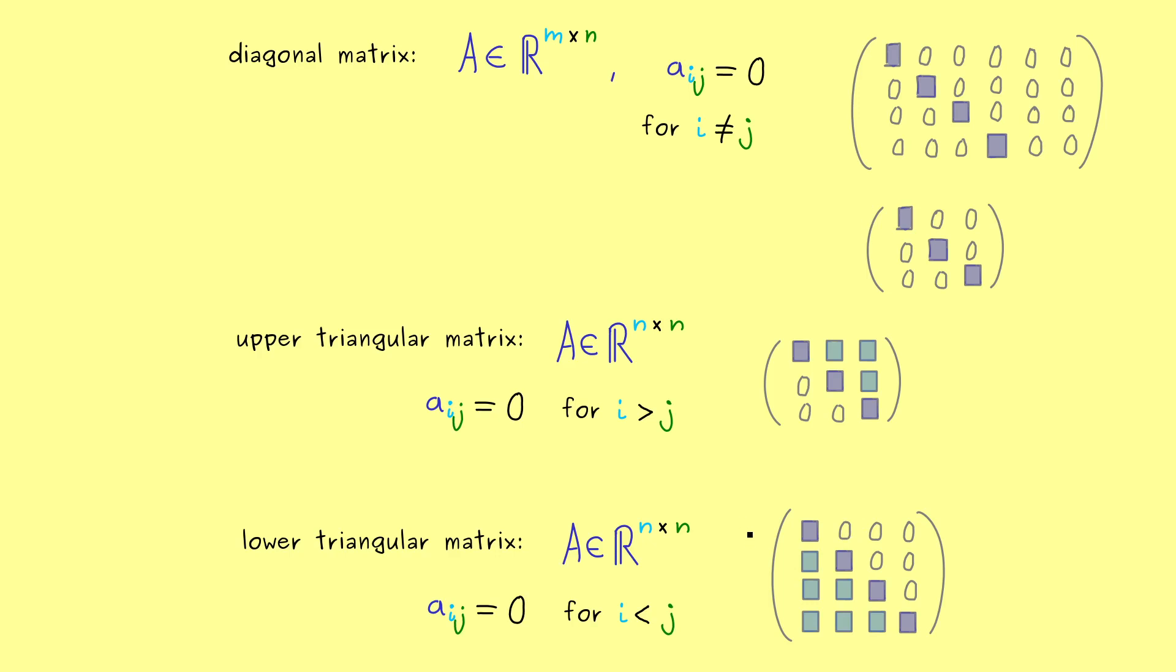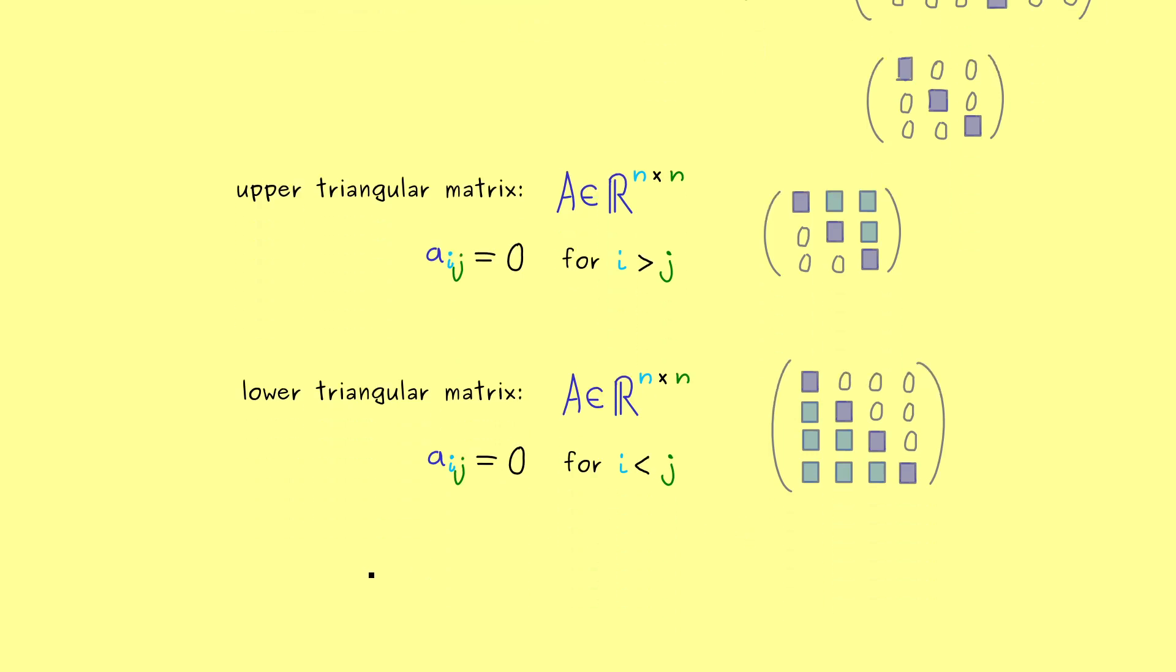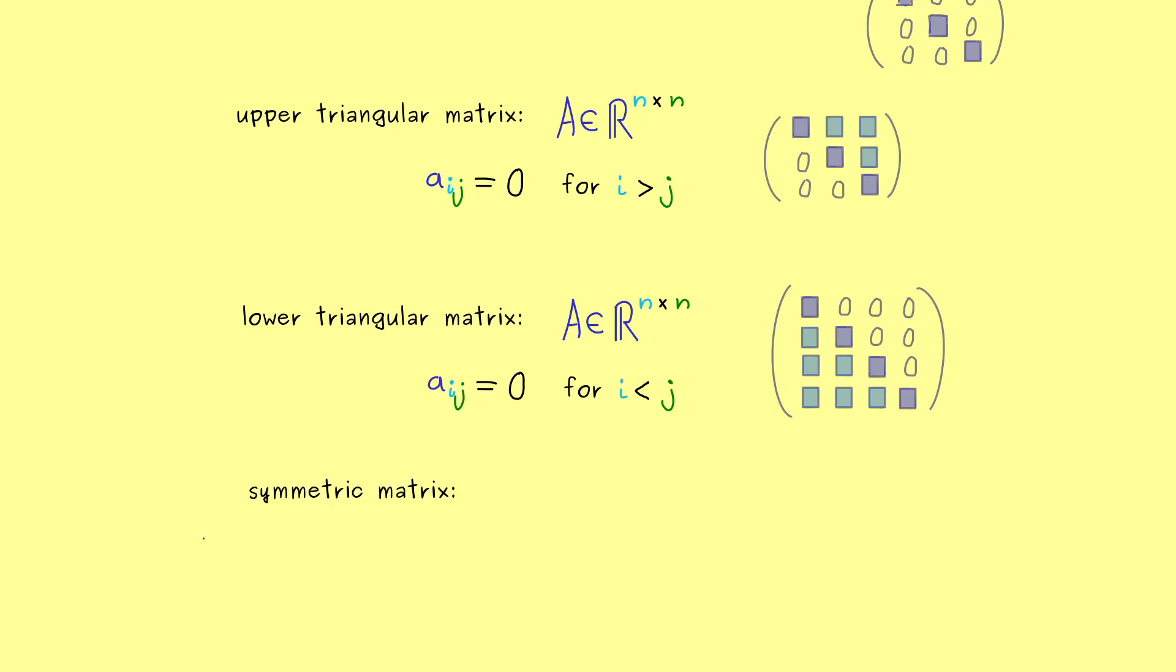Ok then I want to show you two more special square matrices. A very important one is the notion of a symmetric matrix. Also there it might not surprise you the diagonal of the matrix plays an important role. Namely we find a symmetry between the upper right part here and the bottom left part here.